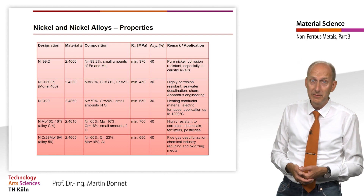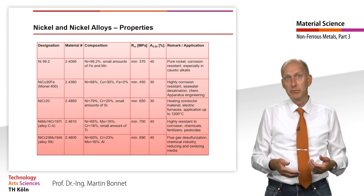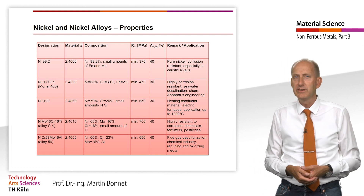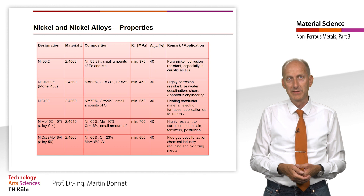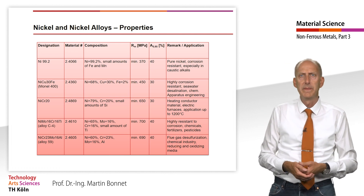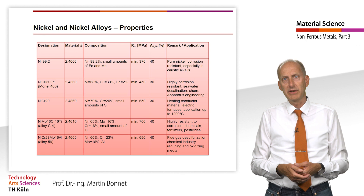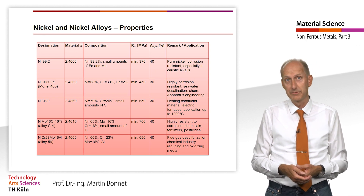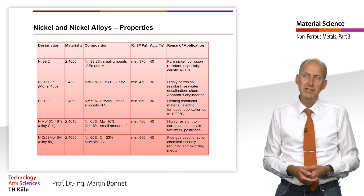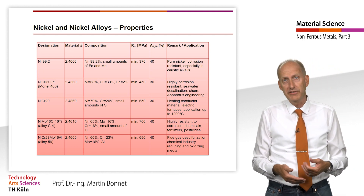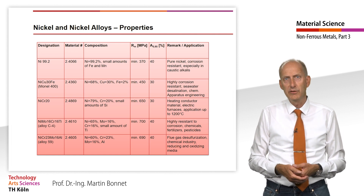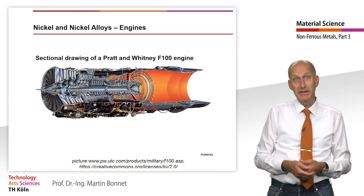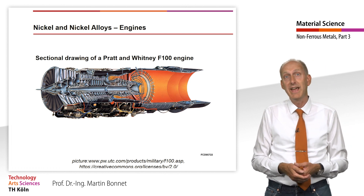Similar to stainless steel, the presence of molybdenum improves resistance to halogen-containing media and provides excellent high-temperature resistance. Applications of alloy C4 are found in plants for the production of inorganic chemicals, fertilizers, and acetic acid. Typical applications of alloy 59 include flue gas desulfurization plants. A typical field of application for nickel-base alloys is engine construction.